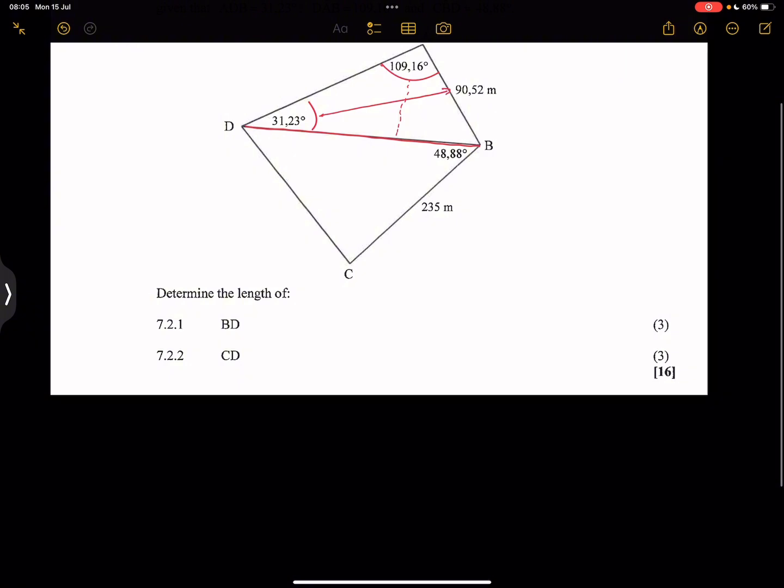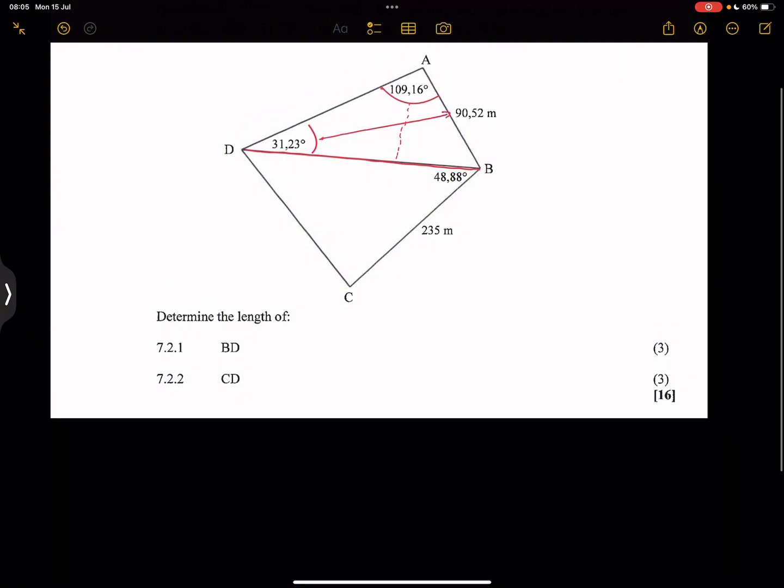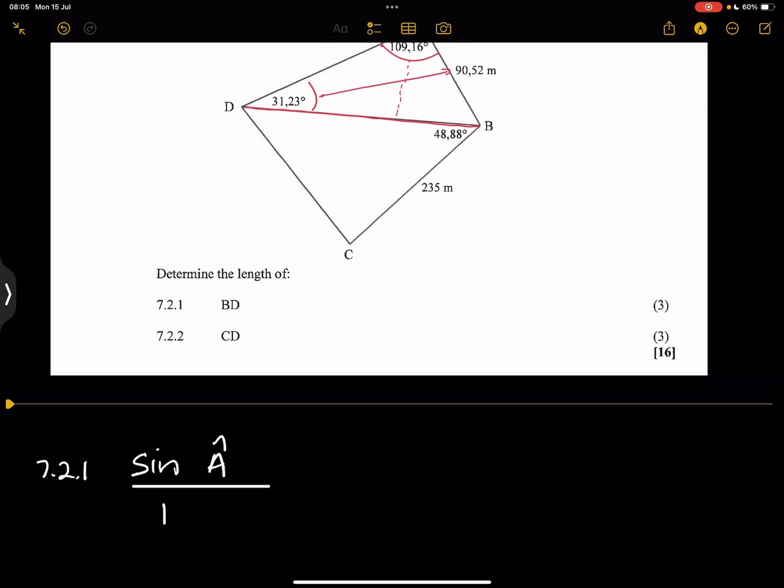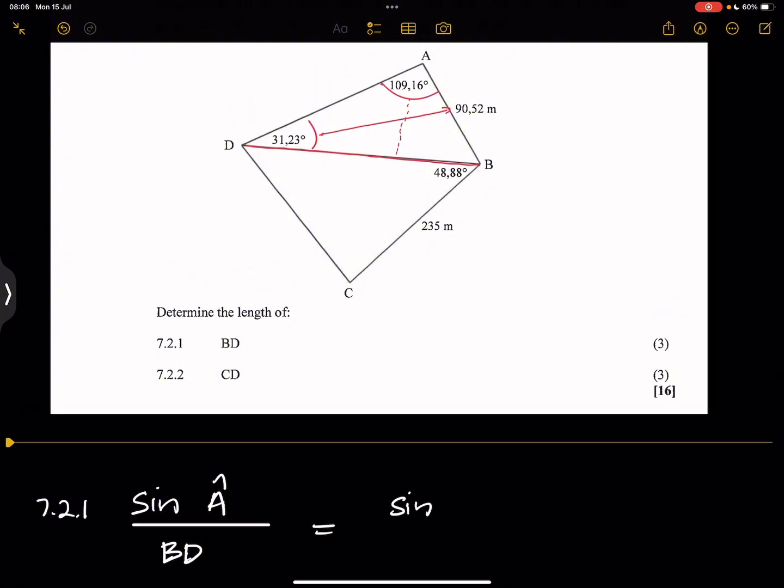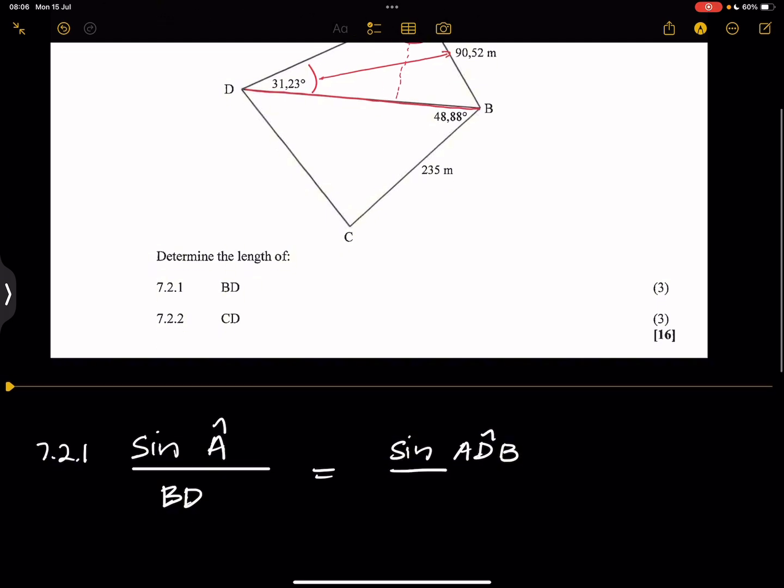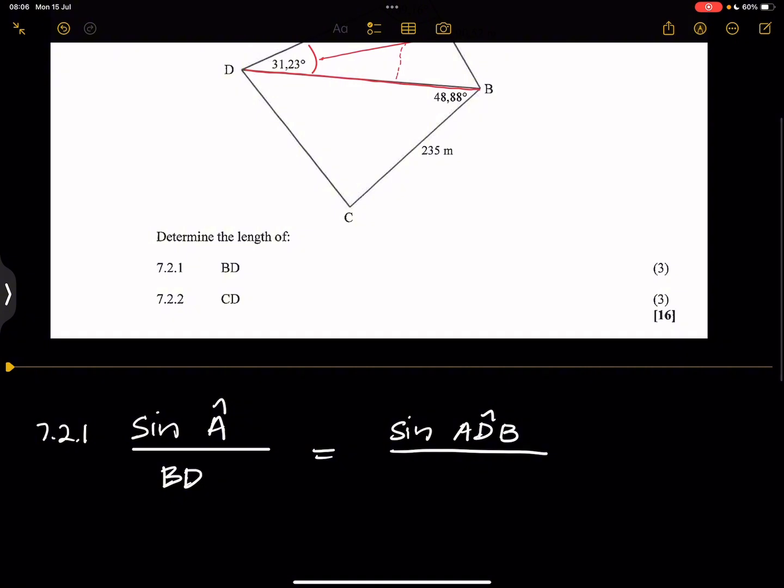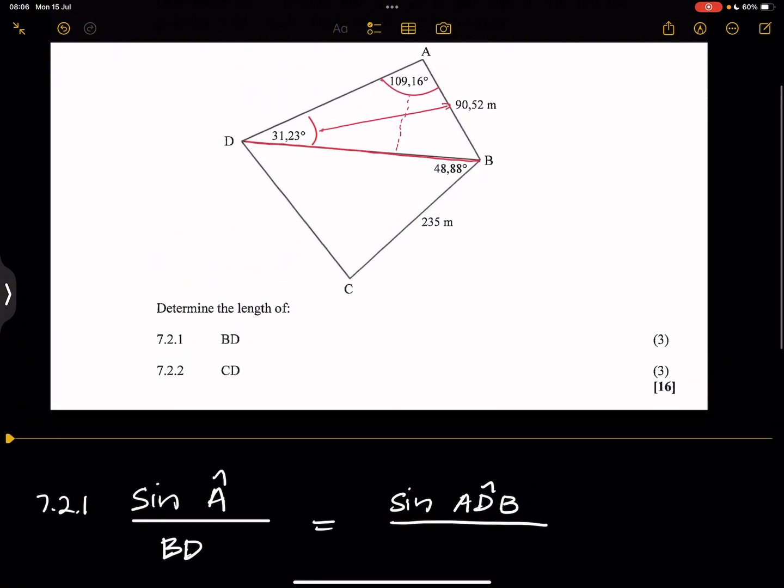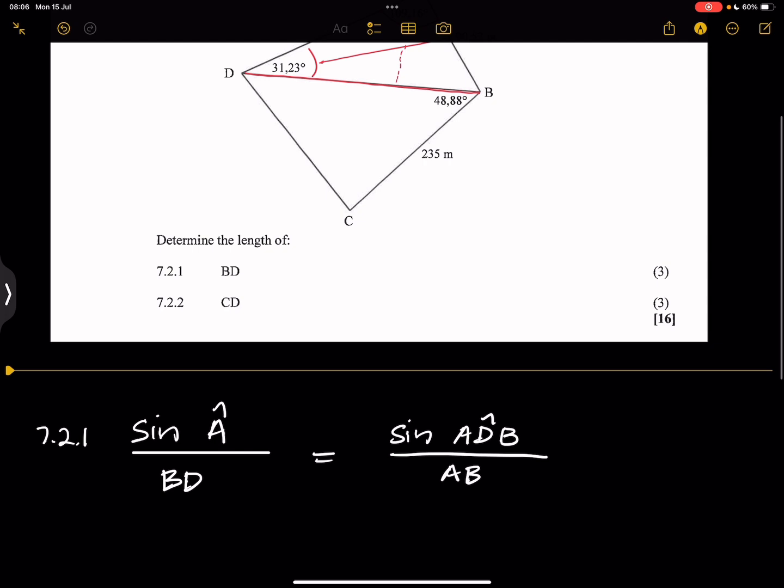So we're going to say, this is 7.2.1. So the sine of angle A divided by the side opposite that, which is BD, is equal to the sine of angle ADB. Remember, I started a little bit saying that because I wanted to say angle D. Divided by the side opposite that, which is side AB.